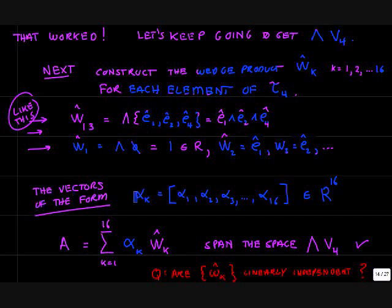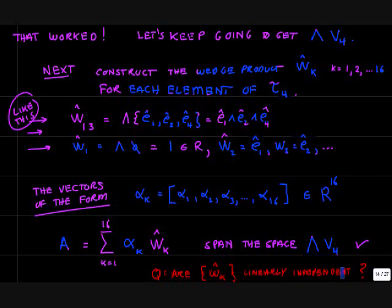We can construct vectors of the form αk times Wk summed from k equals 1 to 16, where αk is a point in R16 — 16 real numbers, the components of the vector A in the 16-dimensional linear space ∧V4. So we have explicitly constructed all of the vectors in this space. Summation and scalar multiplication follow through just the way they did for V4. Now there's a question that needs to be discussed: the WKs do span this space, but we haven't proved yet that they are linearly independent. We know that the individual WKs are non-vanishing, but we don't know that they are a linearly independent set of basis vectors.